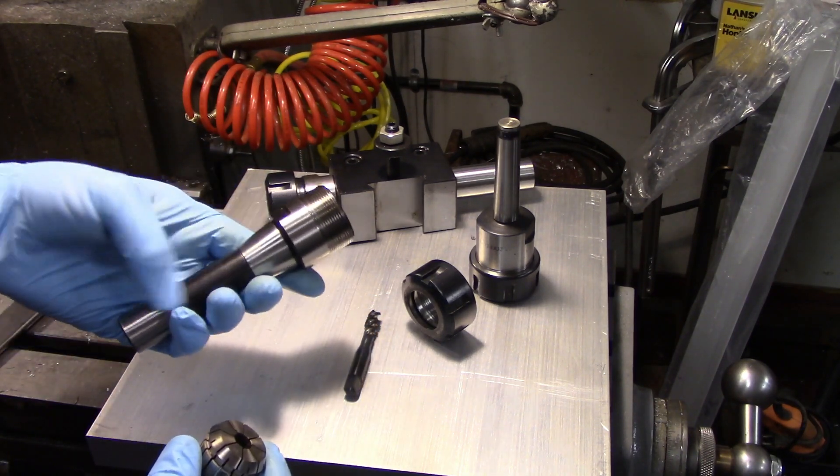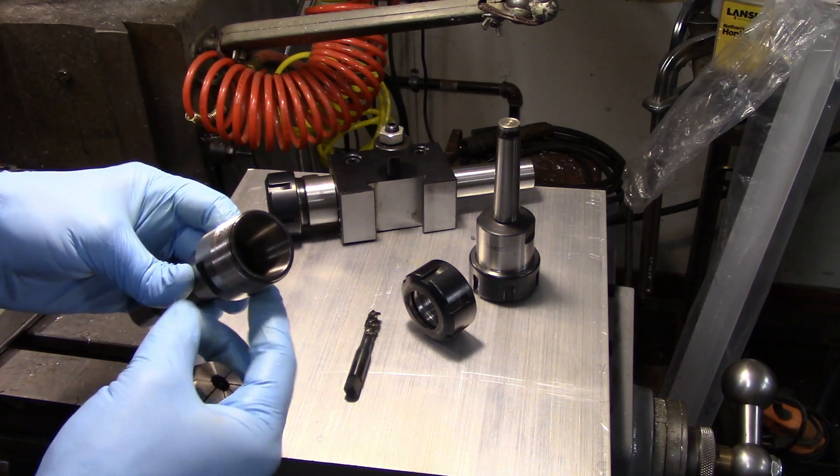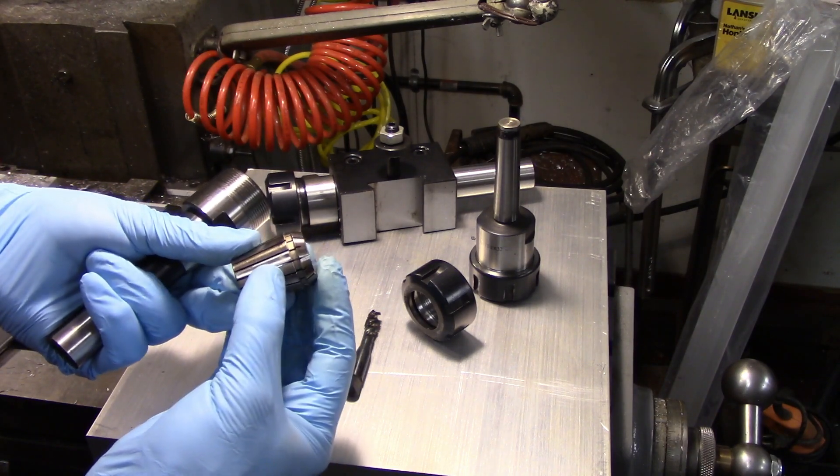I have these ER collet chucks. I have several of these that fit into the mill, and the way the collets work is it's a double angled collet as you can see.